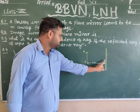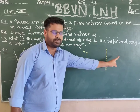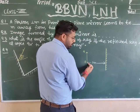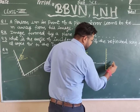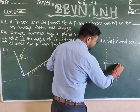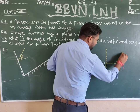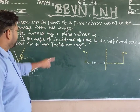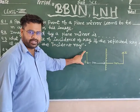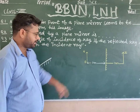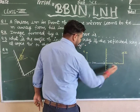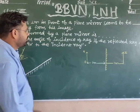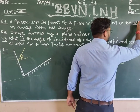So for this plane mirror, the image distance equals the object distance. The person is 1 meter in front, so the image is 1 meter behind — making the total distance between the person and his image 2 meters.